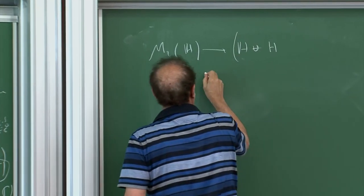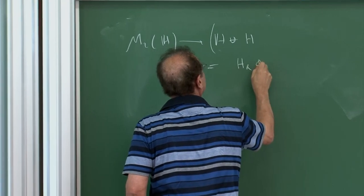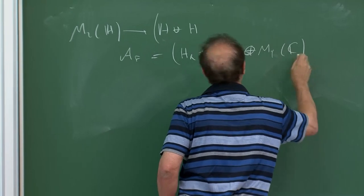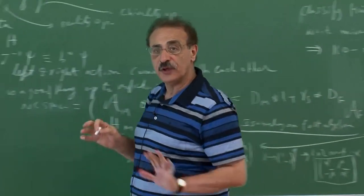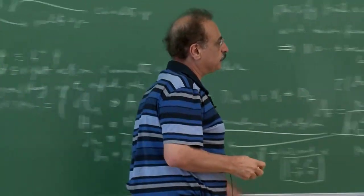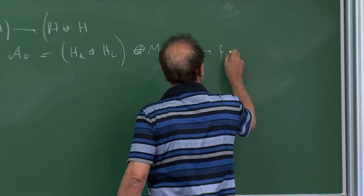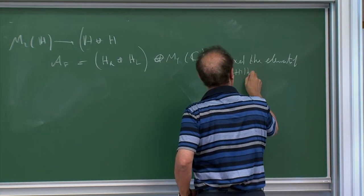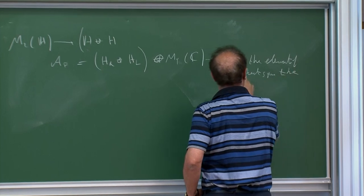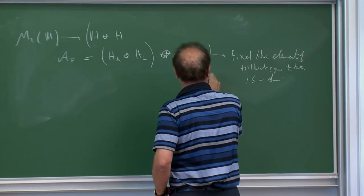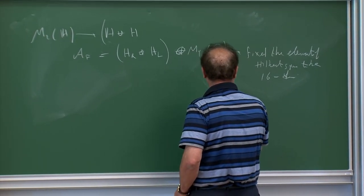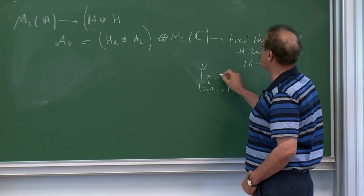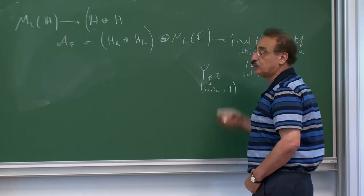The conclusion is that the algebra of the finite space is ℍ_R ⊕ ℍ_L ⊕ M₄(ℂ). This fixed the elements of the Hilbert space to be 16-dimensional, written as ψ_{α,i} where α is a doublet index for SU(2)_R ⊕ SU(2)_L and i is a 4 for SU(4) color.